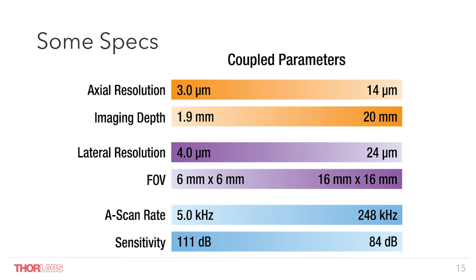Now one last word on the general specs of an OCT system, as there exist three major intercoupled parameter pairs. The axial resolution depends on the spectral characteristics of the light source — the broader the better — and for shorter wavelengths the axial resolution is also better. However, when using a finite element detection unit like a spectrometer with a 2048-pixel line scan camera, we face a limit in imaging depth, and to comply with Nyquist, the imaging depth has to be counterbalanced with axial resolution. In short, high axial resolution systems have a shallow imaging depth, and if a longer imaging depth is needed, we have to compromise on resolution.